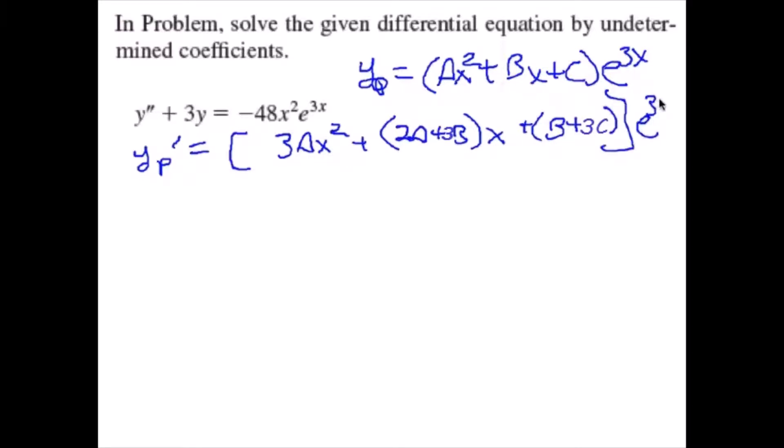yp double prime will take the form 9Ax squared plus (12A plus 9B)